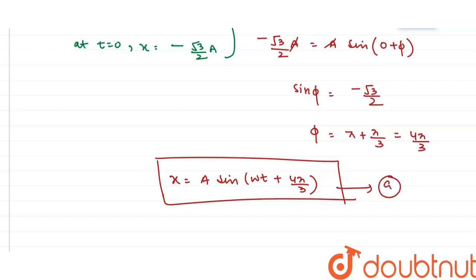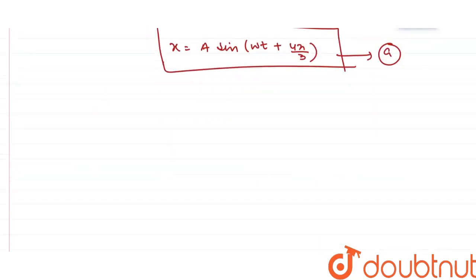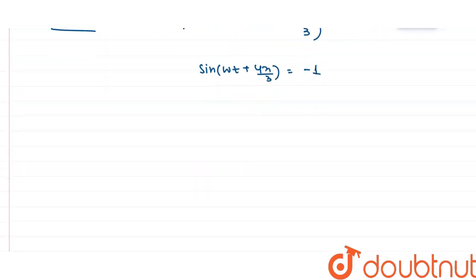In part B, they are asking for the time taken to go directly from the initial position to the negative extreme. At the negative extreme, the value of x equals minus a. Substituting x equals minus a into the equation gives: minus a equals a·sin(ωt + 4π/3). Cancelling a, the value of sin(ωt + 4π/3) equals minus 1. Since sin equals minus 1 at angle 3π/2, we get ωt + 4π/3 equals 3π/2.